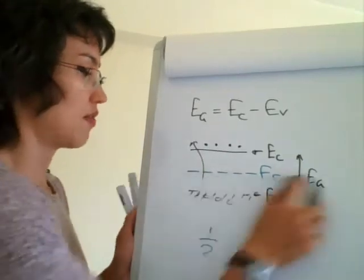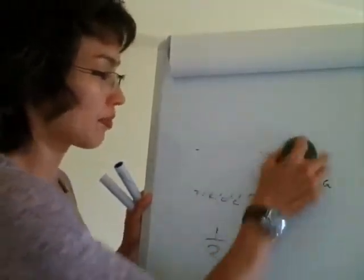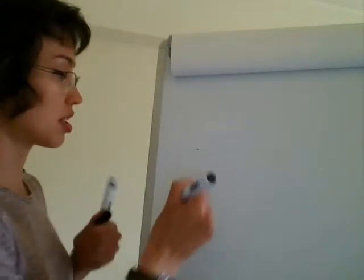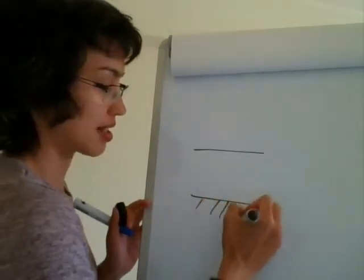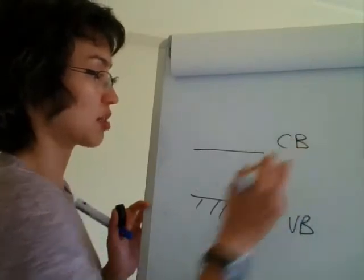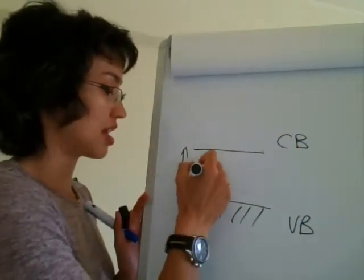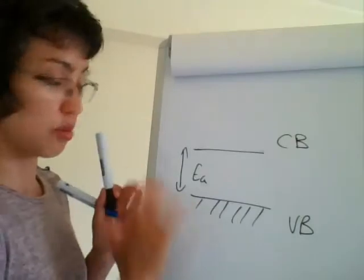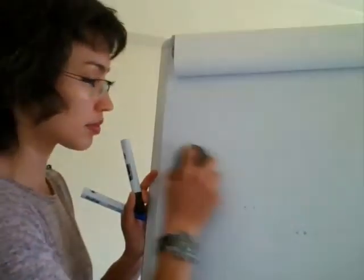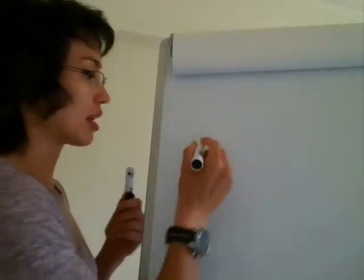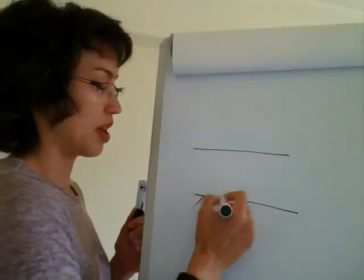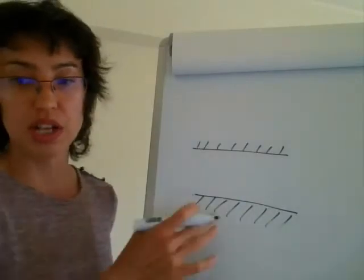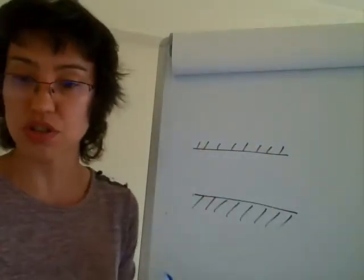You need to know what a band diagram looks like for an intrinsic semiconductor, an insulator, and a conductor. An insulator looks exactly the same — a valence band and a conduction band — but the band gap energy is far too large for electrons to ever overcome. For a metal, you end up with electrons in the conduction band at all times, so the band is partially filled. That situation is very different from a semiconductor.